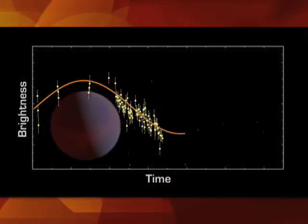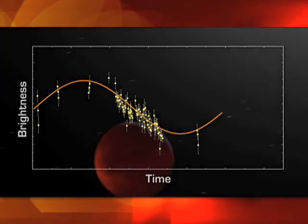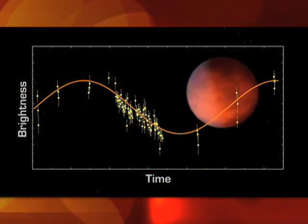Remarkably, that hot spot is not on the side facing the star, but is rotated about 80 degrees towards the boundary between day and night.